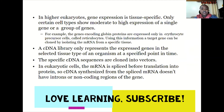In higher eukaryotes such as humans and other animals, gene expression is tissue specific — only certain cell types show moderate to high expression of a given gene or group of genes. For example, genes encoding globin proteins are only expressed in erythrocyte precursor cells called reticulocytes. These globin proteins make up hemoglobin and are exclusively expressed in reticulocytes.